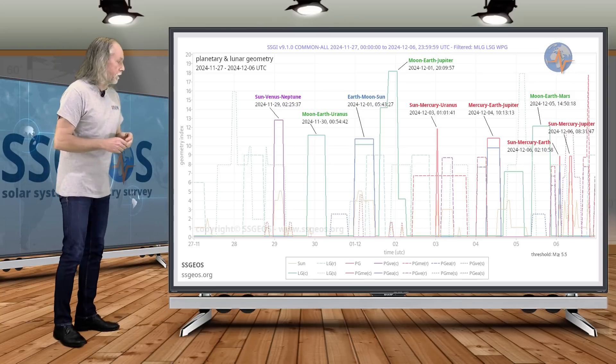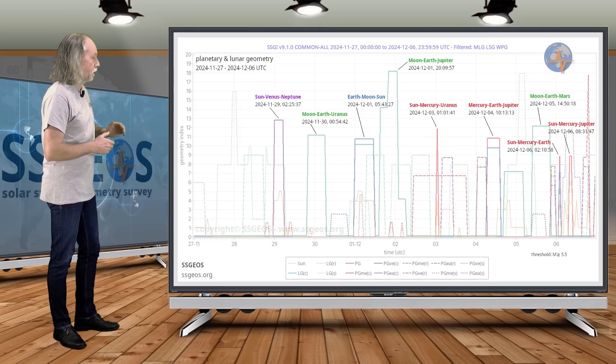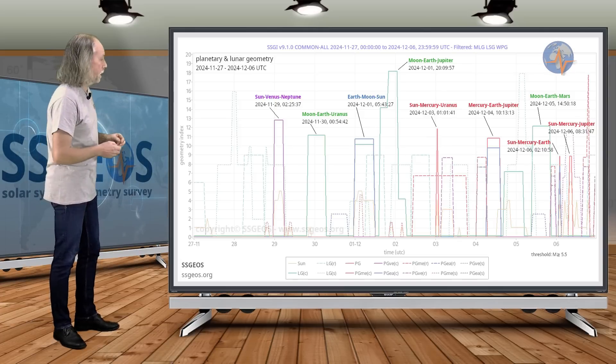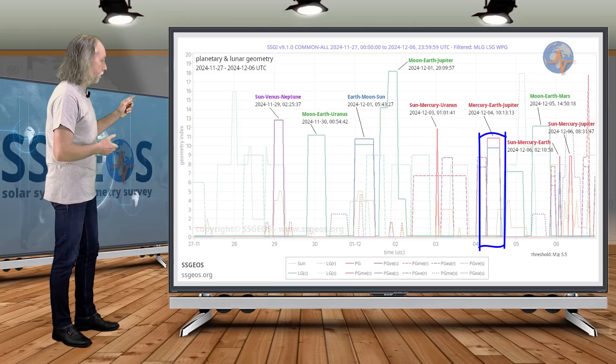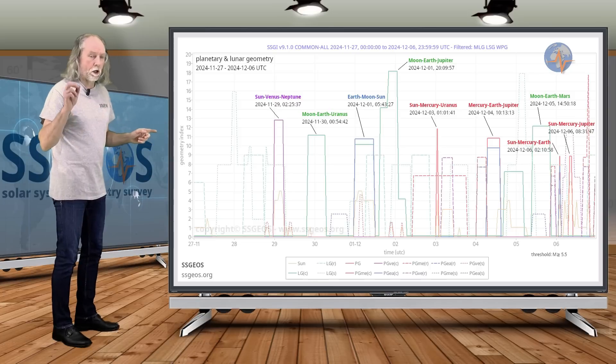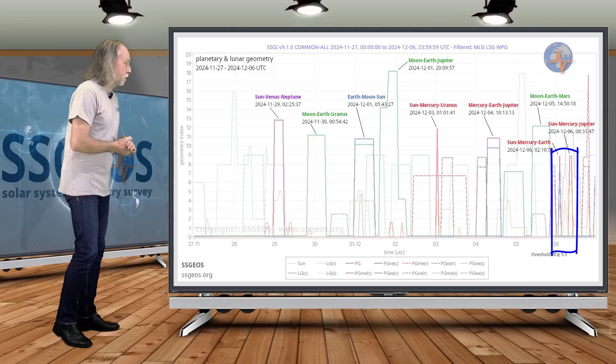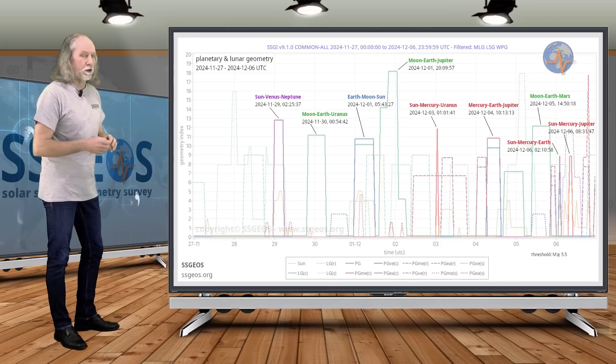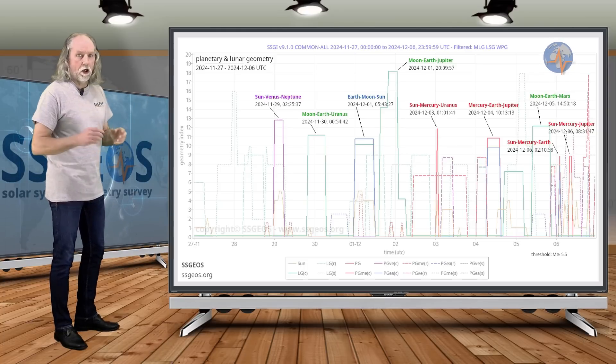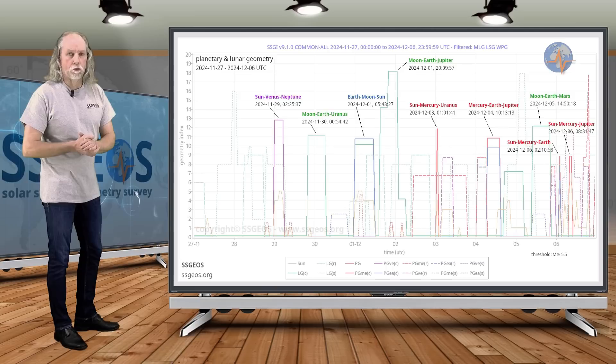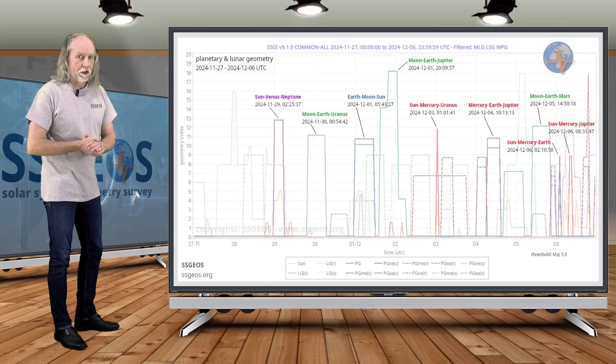And then we talk about the 3rd, around the 3rd of December. And then we see planetary alignments, planetary conjunctions coming up. That's Sun, Mercury, Uranus on the 3rd, Mercury, Earth, Jupiter on the 4th. That deserves some attention. I will come to that in a minute. And then Sun, Mercury, Earth on the 6th and Sun, Mercury, Jupiter also on the 6th. There is a near-triple conjunction coming up. I will explain that in the next update. But we see there on the 6th a convergence of critical planetary geometry coming up. That will extend into the 7th and I will discuss that in detail in the next update.